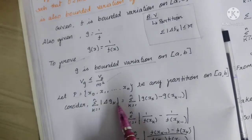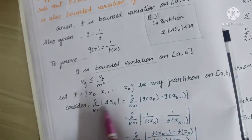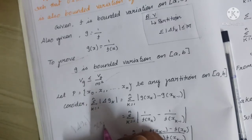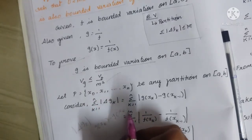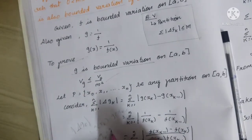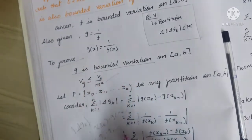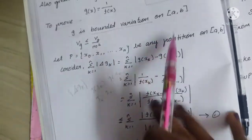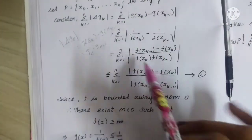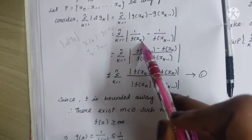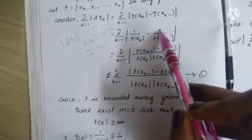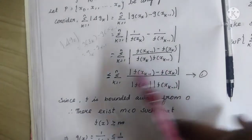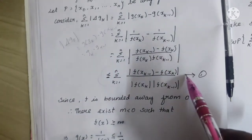We compute the summation from k=1 to n of |Δg_k|. Now |Δg_k| = |g(x_k) − g(x_{k−1})|. Since g(x) = 1/f(x), we substitute: g(x_k) = 1/f(x_k) and g(x_{k−1}) = 1/f(x_{k−1}). After cross multiplication and simplification, this gives us equation number 1: |Δg_k| ≤ 1/m.